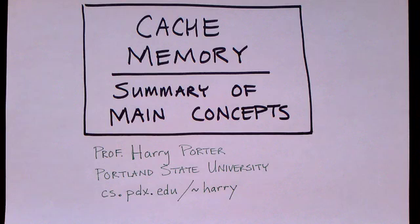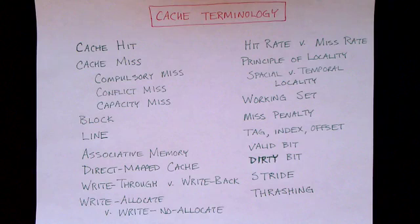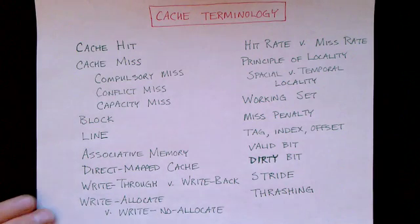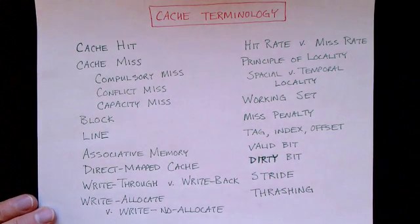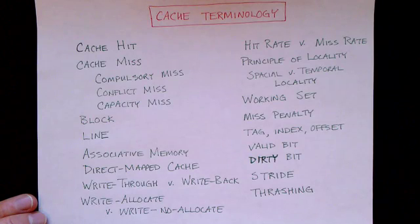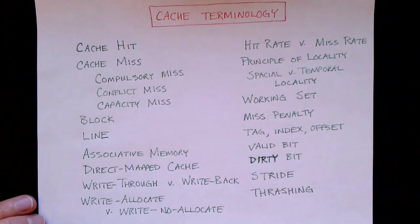I'd like to wrap up this video series with a review of some of the main concepts that we've seen. Generally speaking, cache memory is about 10 times faster than main memory. Cache is made out of static RAM and main memory is made out of dynamic RAM.